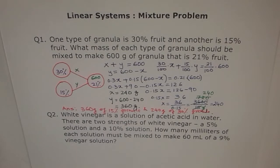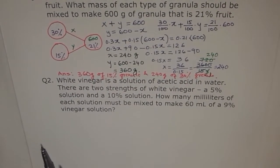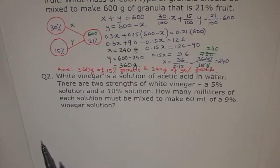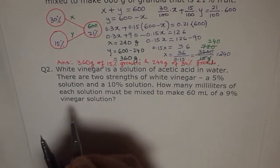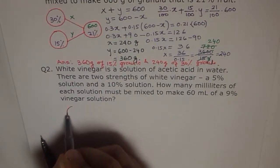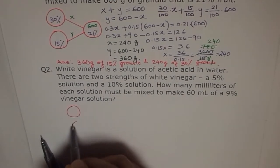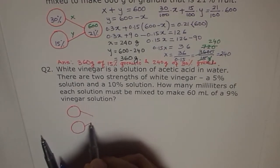Let's look into the second question. White vinegar is a solution of acetic acid in water. There are two strengths of white vinegar: a 5% solution and a 10% solution. How many milliliters of each solution must be mixed to get 60 ml of 9% vinegar? Exactly the same. So let me just move this sheet and put it in focus for you. Here, what we are going to do is follow the same method. First, draw the diagram. Two things are mixed together, what do we get? We get the third thing.